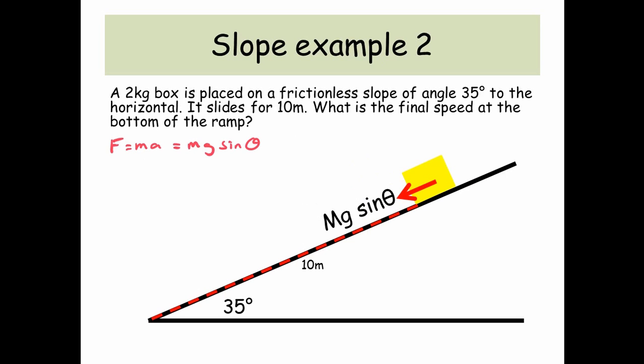So F equals MA and it's frictionless, so there's no friction. The only force acting on our box that's going down the slope is MG sin theta. So we divide both sides by M and we find the acceleration is G sin theta, which is 9.81 times sin of 35, which is equal to 5.63 meters per second squared.